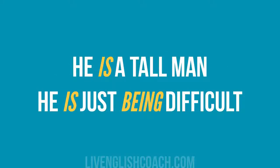Now let's look at some more examples. He is a tall man — this is his permanent characteristic, it doesn't depend on anything. But if we say 'he is just being difficult' — да он просто придуряется, специально вставляет нам палки в колеса — the verb to be becomes dynamic, not stative, because it's how he is behaving right now. It's a shade of behavior, not a permanent characteristic that always belongs to him.